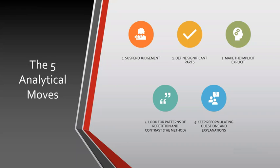So if you've been reading Writing Analytically, you know that the method is a series of questions in the context of five analytical moves. Number one: suspend judgment. Two: define significant parts. Three: make the implicit explicit. Four: look for patterns of repetition and contrast — that's the method. And five: keep reformulating questions and explanations. There are several steps we're going to go through here, and the method is probably the most important one to get you to the academic argument you want.